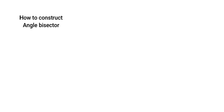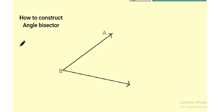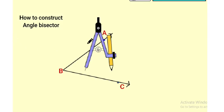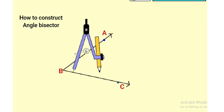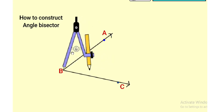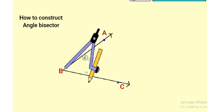Draw an angle ABC of any measure. This is angle ABC. Now watch carefully how to bisect this angle ABC using a compass.